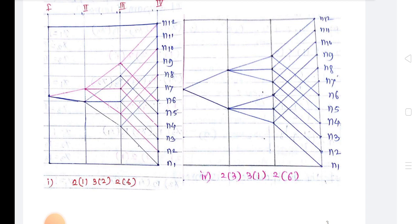For constructing the kinematic diagram of the gearbox, it is required to know the distribution of speeds on the input shaft, intermediate shafts, and output shafts. For this purpose, the following parameters are important: structural formula, structure diagram, ray diagram, and speed diagram.